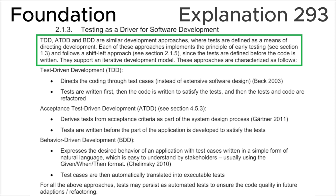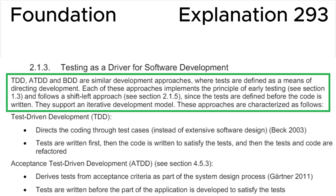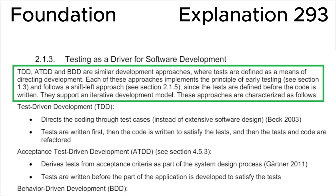Finally, let's look at section 2.1.3, 'Testing as a Driver for Software Development,' in the ISTQB syllabus, where we can see that TDD, ATDD, and BDD are similar development approaches where tests are defined as a means of directing development. Each of these approaches implements the principle of early testing and follows a shift-left approach, since the tests are defined before the code is written. This is fully consistent with the correct answer D.